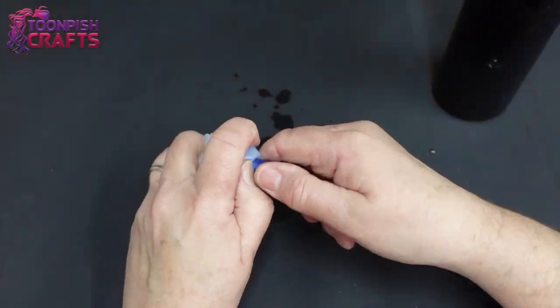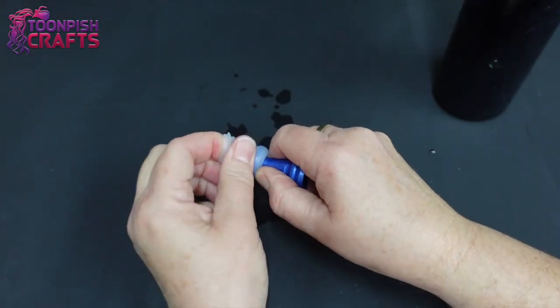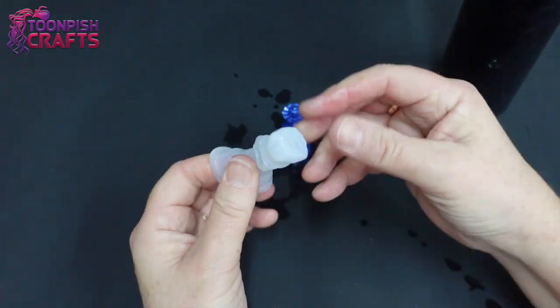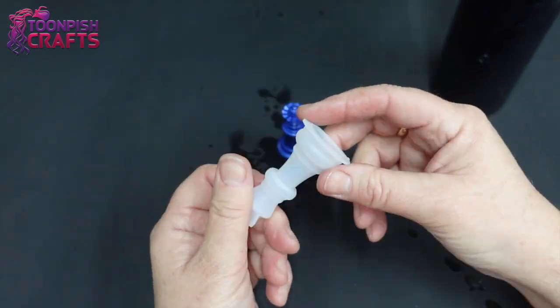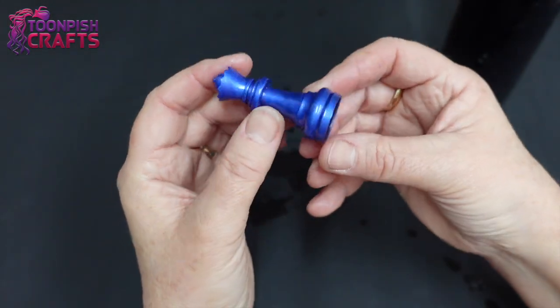Now I did pour a little bit more resin in this chess piece when it went into the pressure pot and it did cover up where the tube was. So I knew I'd have to sand it down but I didn't mind that, I knew where it was, it was in the bottom.